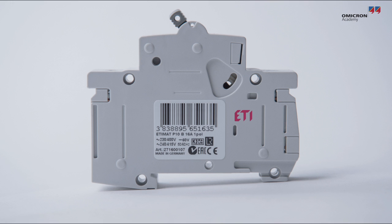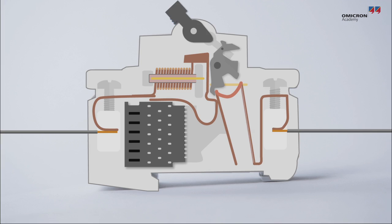Inside of an MCB, the path the current is taking across the closed contacts is visible, as are the tripping components.